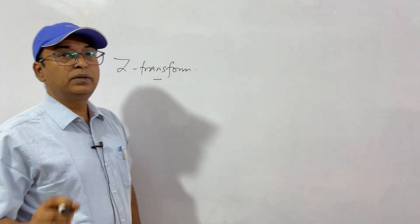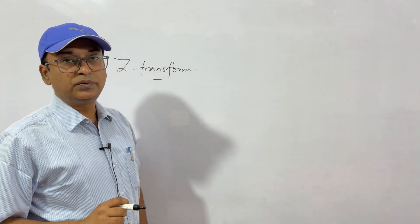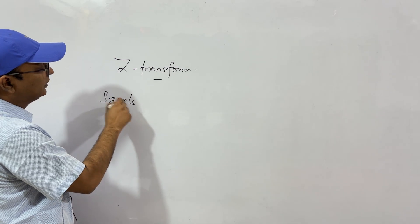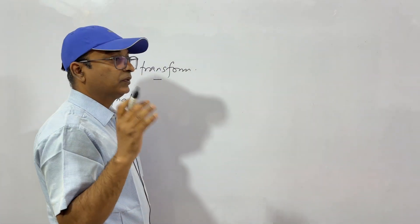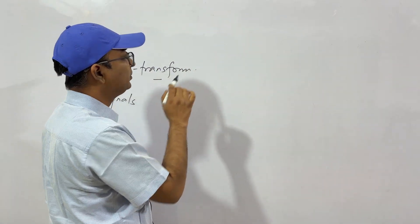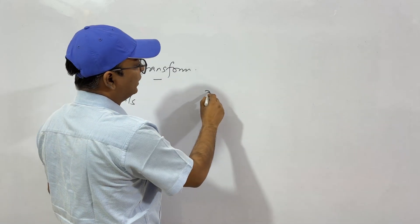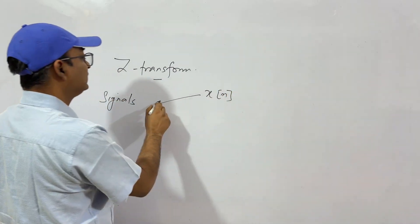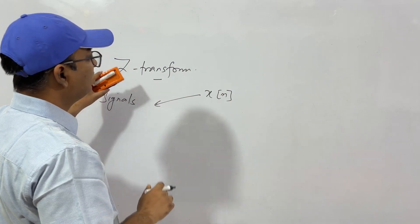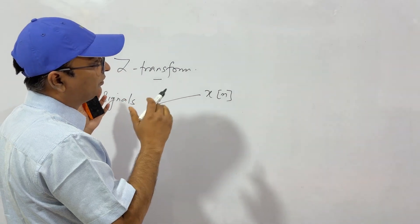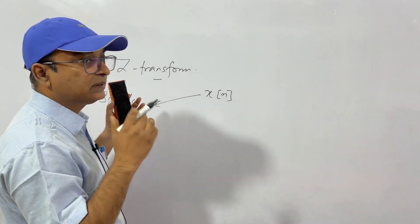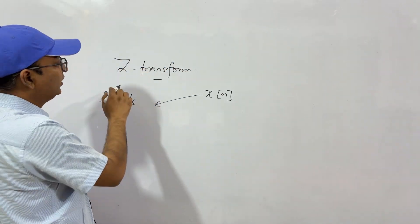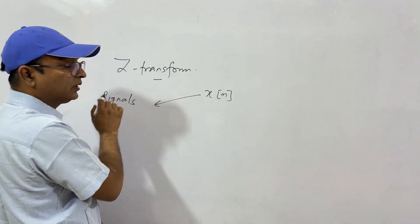We have studied Z-transform purely from a mathematical point of view. Now let us see it from a signals perspective. When we were understanding it mathematically, X(n) was simply a mathematical function. Here, X(n) is a signal. The treatment is the same, but there is a difference in terminologies and understanding. We will also understand the signals and waves when we study Z-transform for signals.